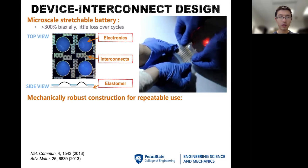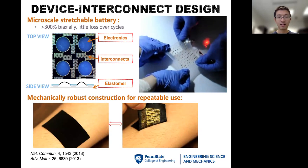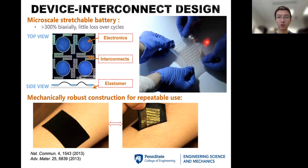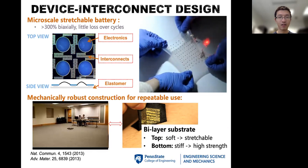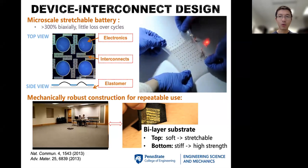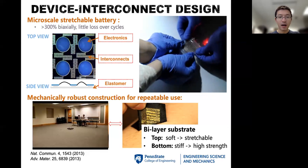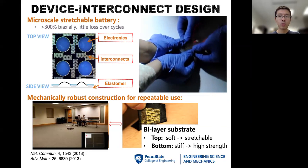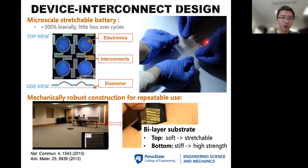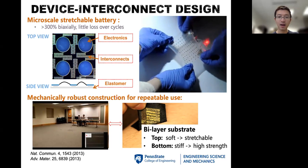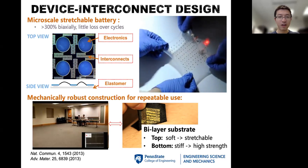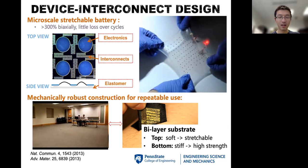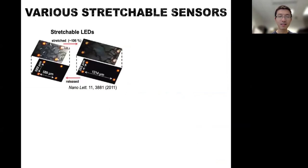This approach can be applied on the skin surface to capture vital information, useful for human-machine interaction. For example, a device on the skin captures muscle signals and wirelessly modulates the flight of a drone — commanding it to take off, move forward, rotate, and land. Let me show the first few seconds of that demo, then we'll discuss how this concept extends to health monitoring applications.